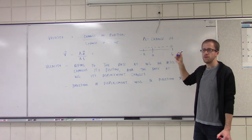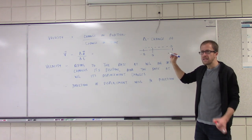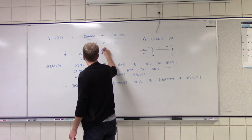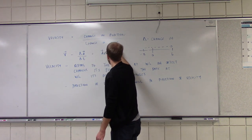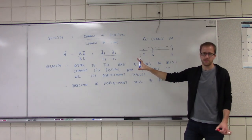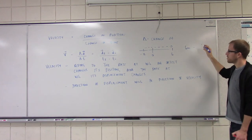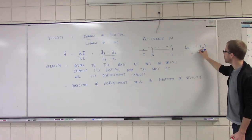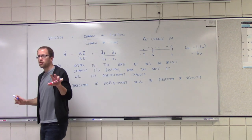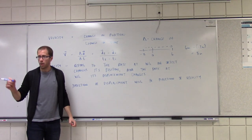Well, the change in our position is our final position minus our initial position, and our change in time is our final time minus our initial time. What was our final position? It was six — six meters minus negative two meters — so our total displacement was eight meters. And this idea of the change in something is going to come up quite a bit. So this whole final minus initial is going to come up a lot in all of our work.